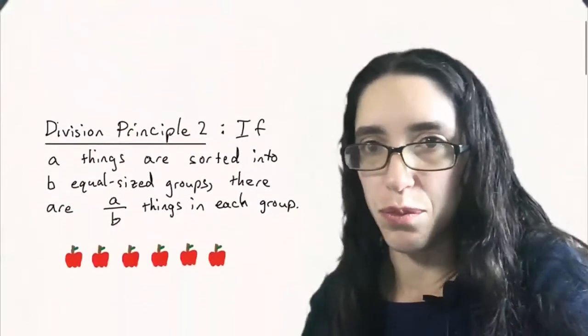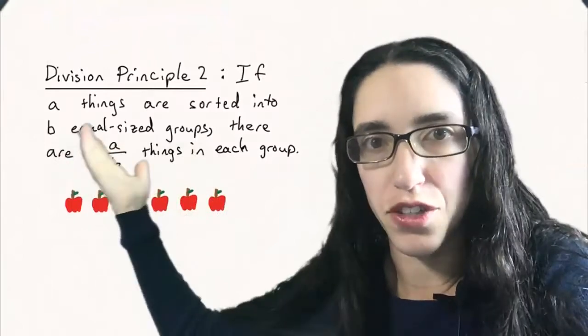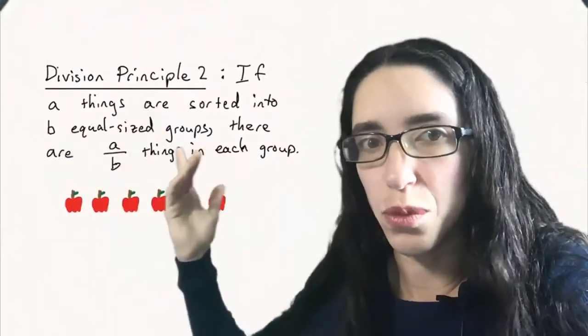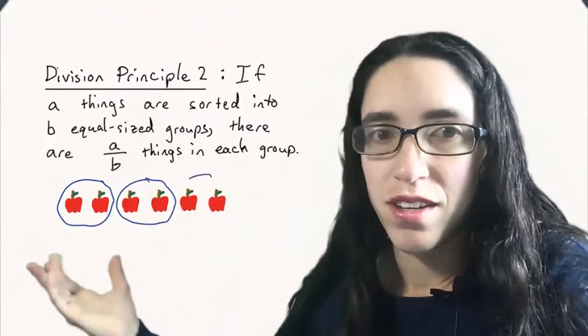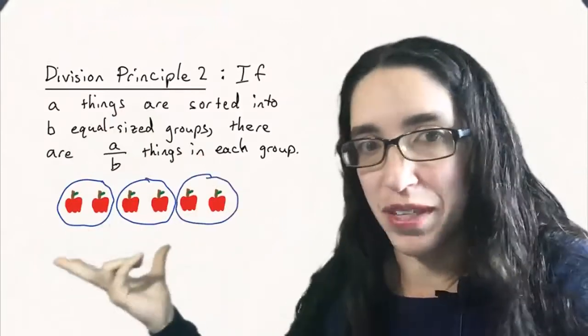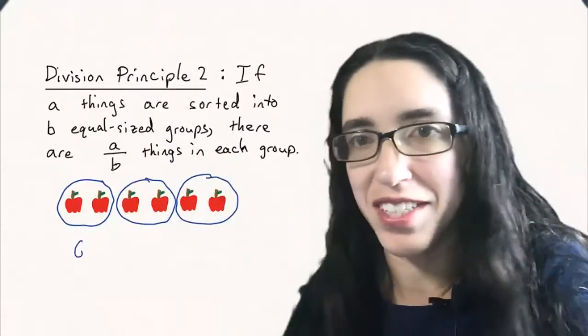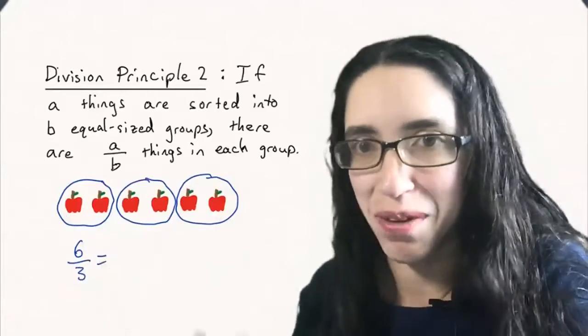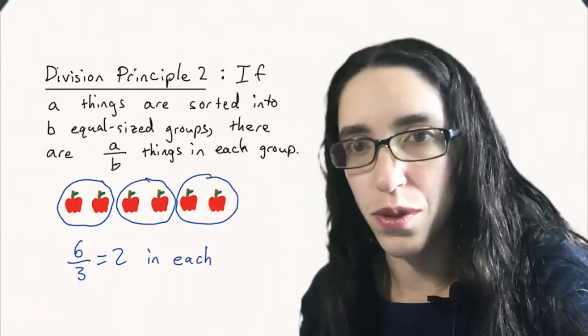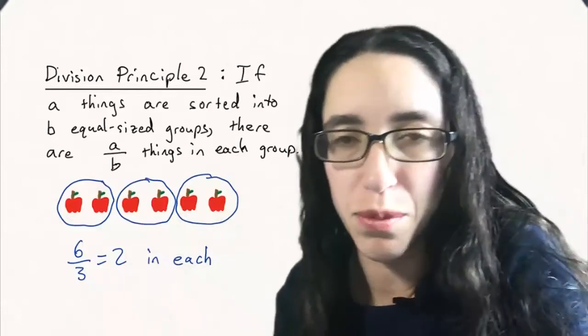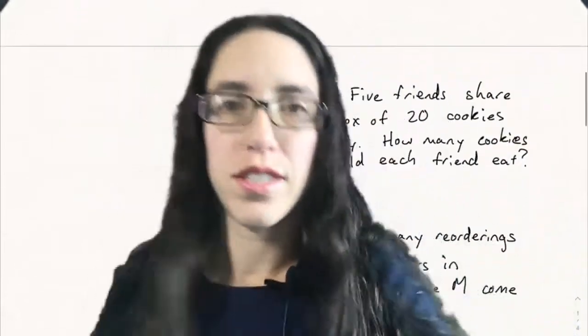Now there's another way of stating the division principle, a different take on it. If a things are sorted into b equal sized groups, then there's a over b things in each group. As another example, if you have six apples and you sort them into three evenly sized groups, then there's six divided by three or two apples in each group. So those are two ways of stating the division principle. Both come up very often in combinatorics, and we're going to see some examples today.